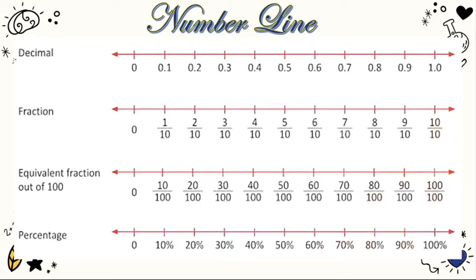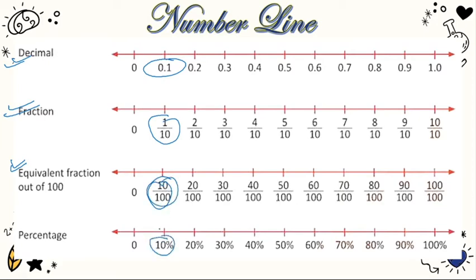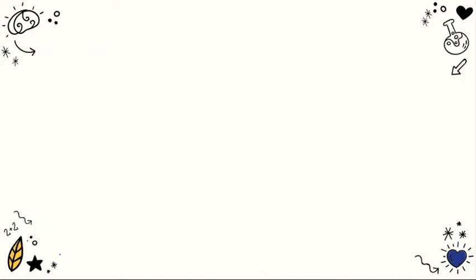Now, the number line. If we represent decimals on a number line, for example 0.1 corresponds to 10% on the number line. So 10%, 20%, 30% can be represented at equal distances on the number line.